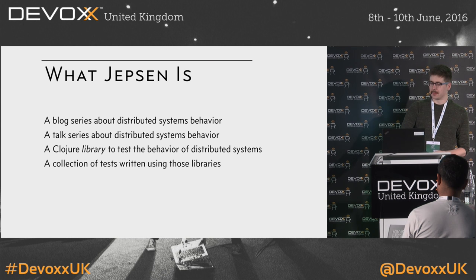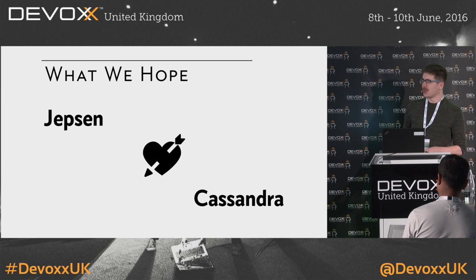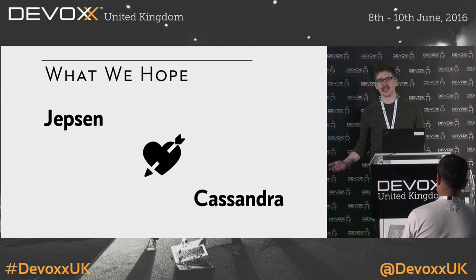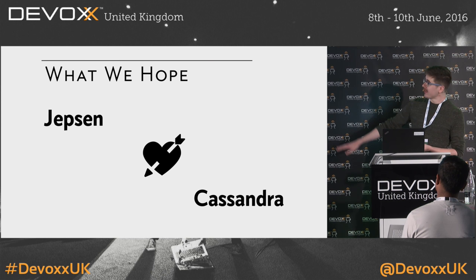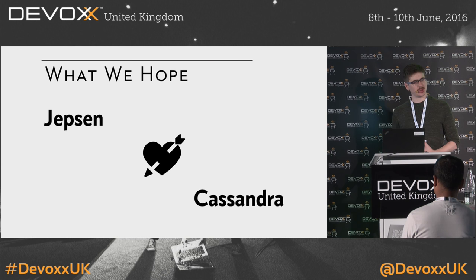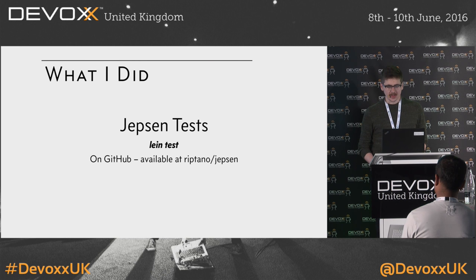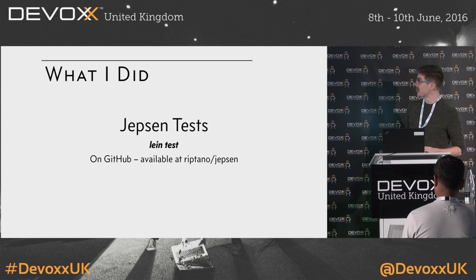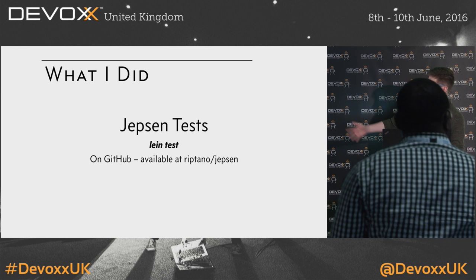What we hope is that Jepsen and Cassandra get along — and I don't mean that in some marketing sense. As developers, we don't really care about a green test dashboard if it doesn't actually help us produce better software. When I say we hope Jepsen gets along with Cassandra, what I mean is that the style of testing Jepsen employs helps us develop a more stable Apache Cassandra. So I wrote Jepsen tests for Cassandra. They're open source, available at Riptano on GitHub, easy to run on local machines using Leiningen tests. They're just Clojure unit tests.